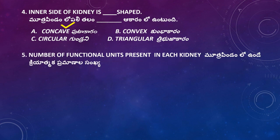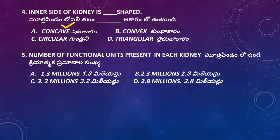Question: What is the number of functional units present in each kidney? Options: 1.3 million, 2.3 million, 3.2 million, 2.8 million. The right answer is 1.3 million, because the number varies from 1.3 to 1.8 million in each kidney.